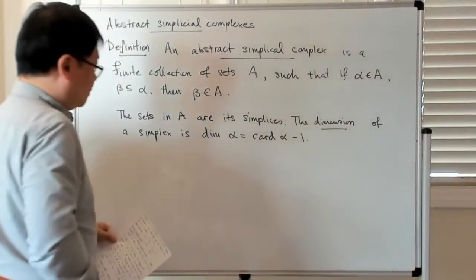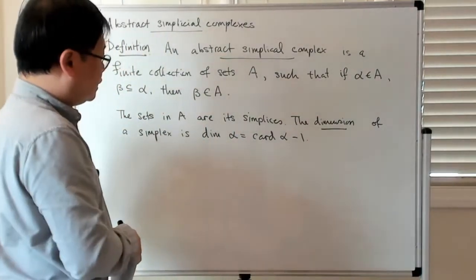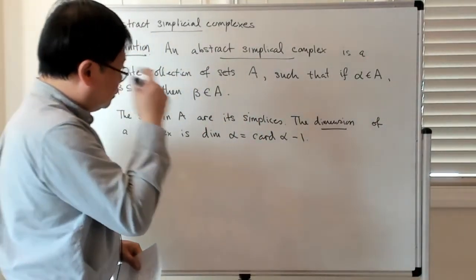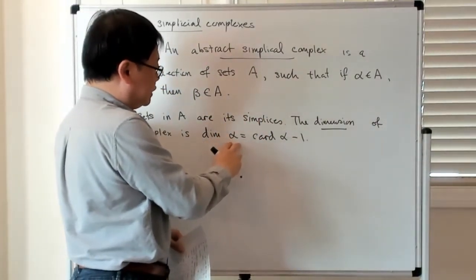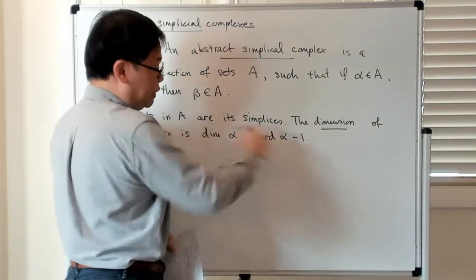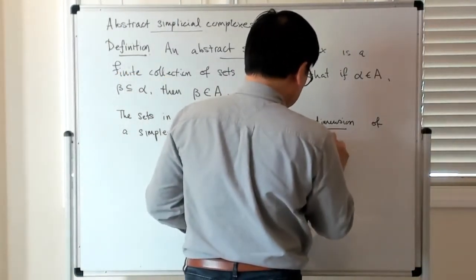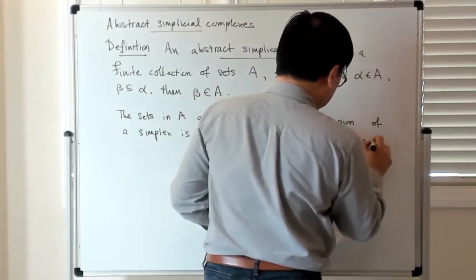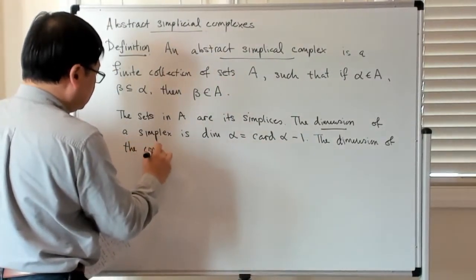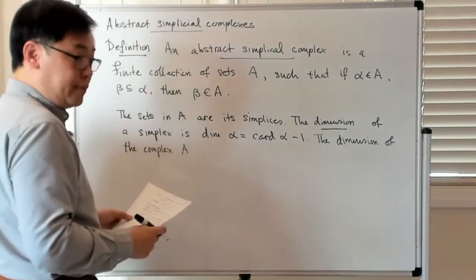The same way that if you have a k-dimensional simplex in the geometric case, it consists of k plus one points in that set. So if you want to take the dimension of an abstract simplex, it has to do with the cardinality of that set alpha, and then you subtract one. Then the dimension of the complex is just the maximal dimension of its simplicies.